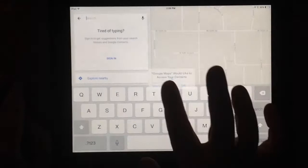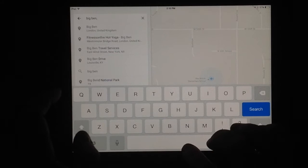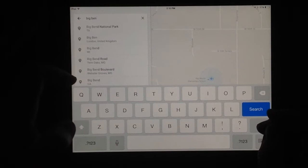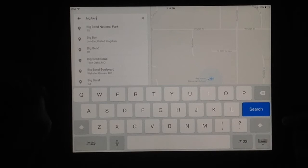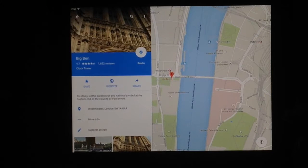I'm going to type in Big Ben and it comes up with some things like Big Ben National Park Texas. Now I'm talking about the Big Giant Clock in London. So you might have to look down your list or type in more information like type in London. Big Ben London United Kingdom, that is what I want.